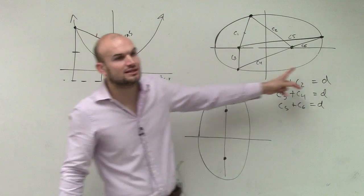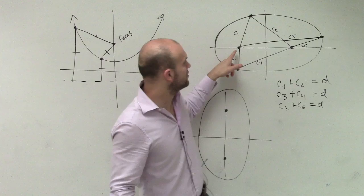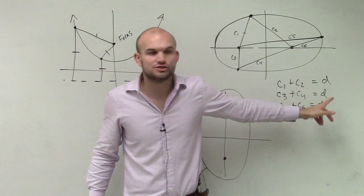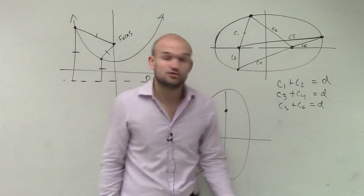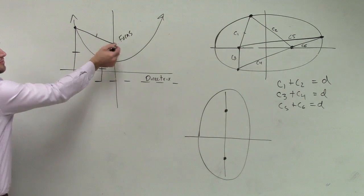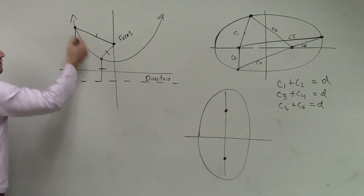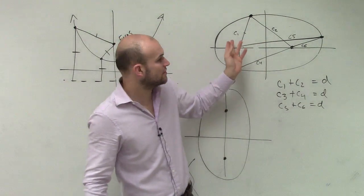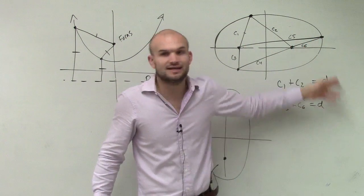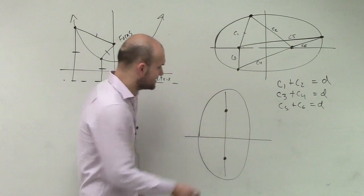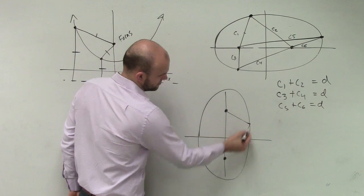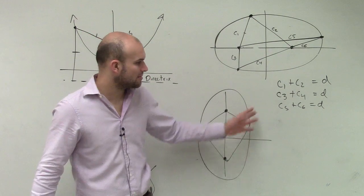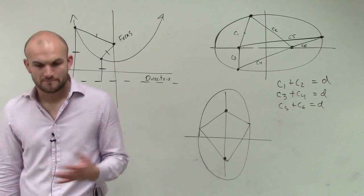So no matter what point I pick on the ellipse, the addition of the distance from each foci to that point, the sum of those values is going to equal a constant number, which is true for all points of your ellipse. It's a little bit different than our parabola, which says the distance from the focus is equal to the directrix for every point. Now, it's the sum of your foci—the distance from each foci to your point, the sum of those two values is going to equal a constant value. That's your definition of an ellipse.